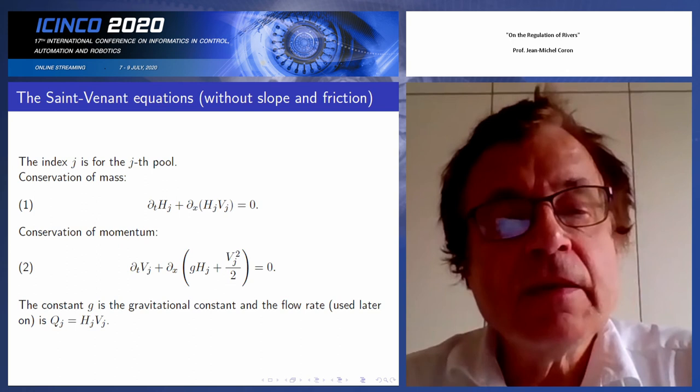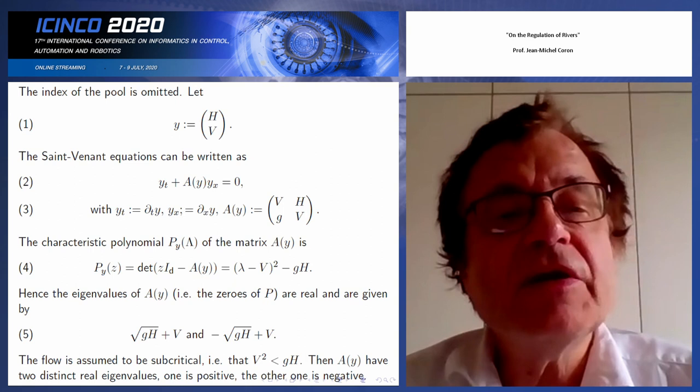We can put this in a more compact form. We let y equal the column vector (h, v), and then the equations can be written as y_t plus F(y) y_x equals zero, where y_t is the partial derivative with respect to time.